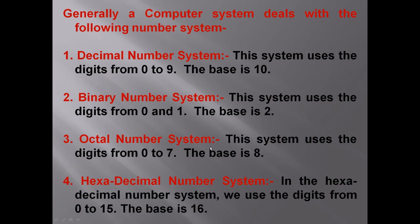Octal number system uses digits from 0 to 7, and its base is 8. Next is hexadecimal number system. In the hexadecimal number system we use the digits from 0 to 15. The base of the hexadecimal number system is 16.